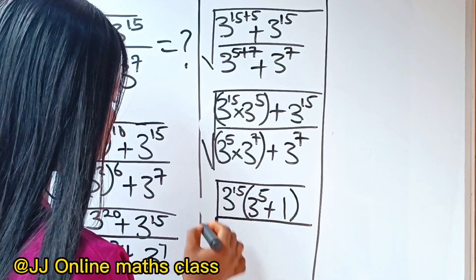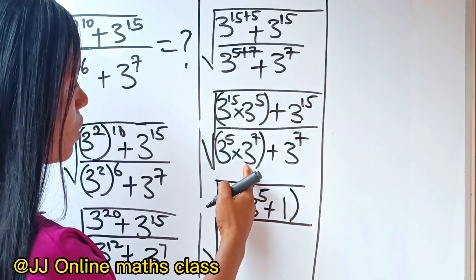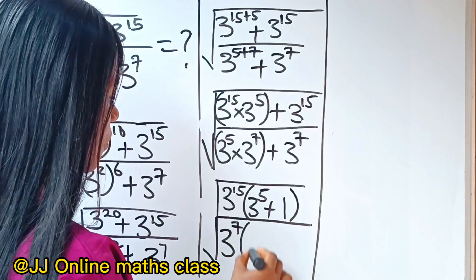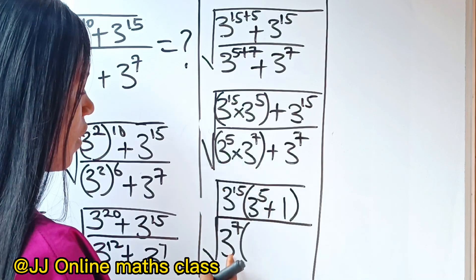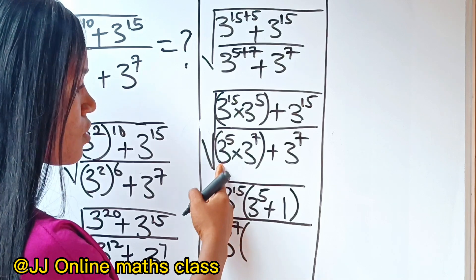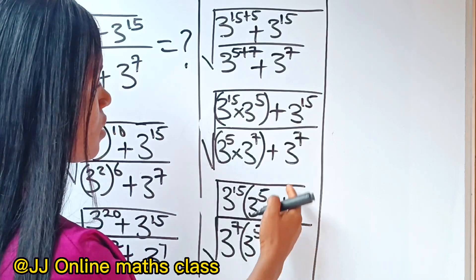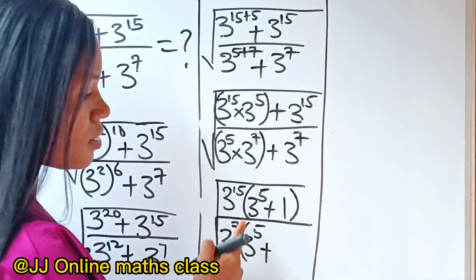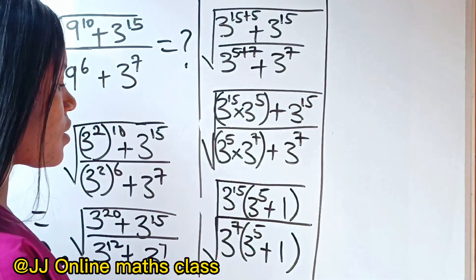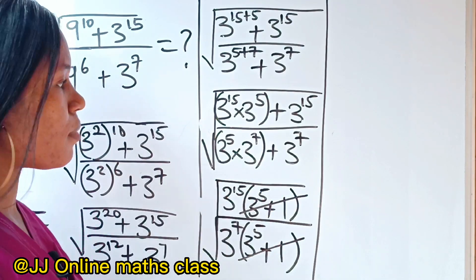In the denominator, what they have in common is 3 to the power of 7, so we factorize that out. When this is divided by 3 to the power of 7, you have 3 to the power of 5 remaining, plus when this is divided by this you have 1. Notice that the factored expressions are the same, so we can cancel them out.